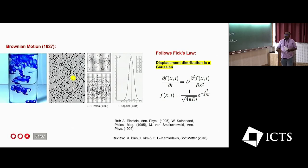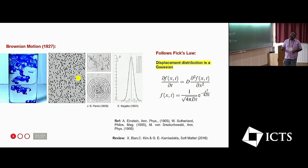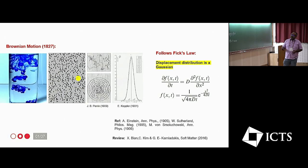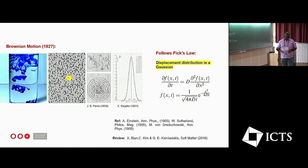And this was some caricatures from Perrin's diary. He shows that this kind of motion actually follows this kind of random walk and the underlying distributions are Gaussian, that was shown by Von Smoluchowski.